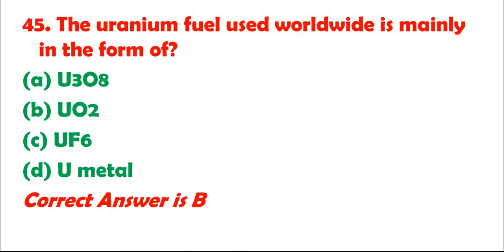Question 45: The uranium fuel used worldwide is mainly in the form of: A. U3O8. B. UO2. C. UF6. D. U (the metal). Correct answer is B.